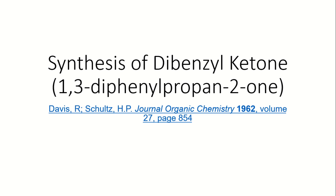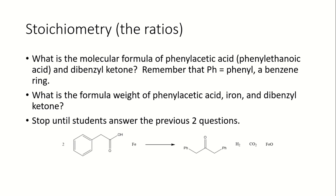We are going to try our best to explain the procedure in detail for you to understand as best as possible. This is the reaction procedure. We are going to work with two molecules of phenylacetic acid and one molecule of iron in order to make D-benzylketone. We are going to get byproducts or side products of hydrogen gas, carbon dioxide, and iron oxide.